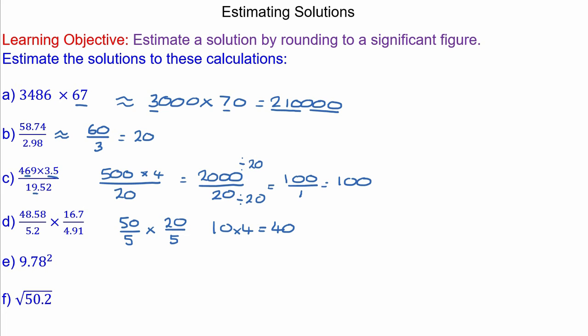For question E, 9.78 we round to 10, and 10 squared is 100.